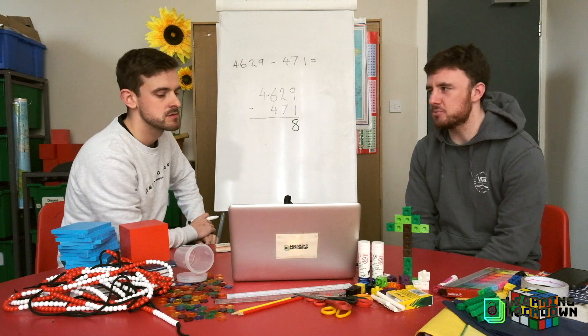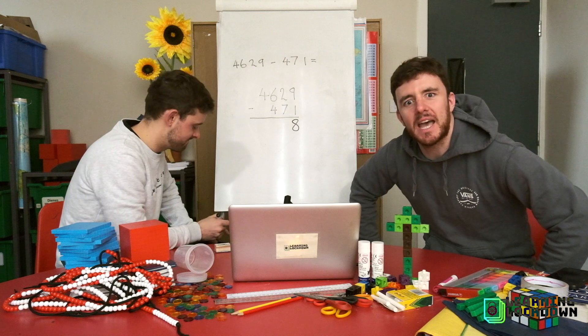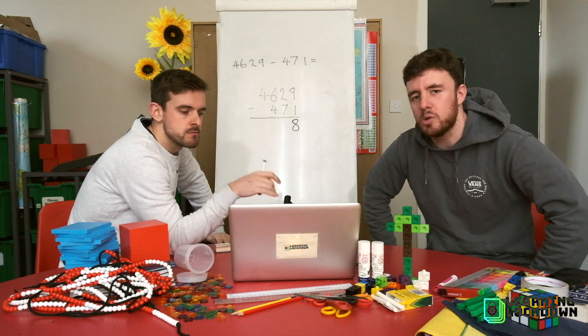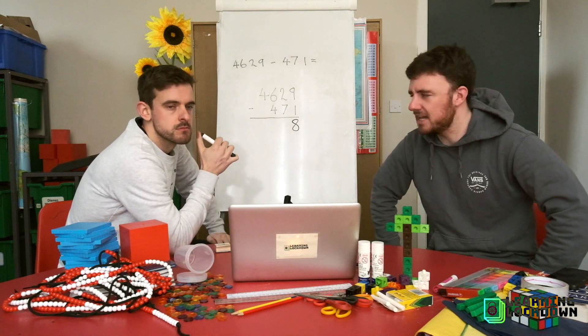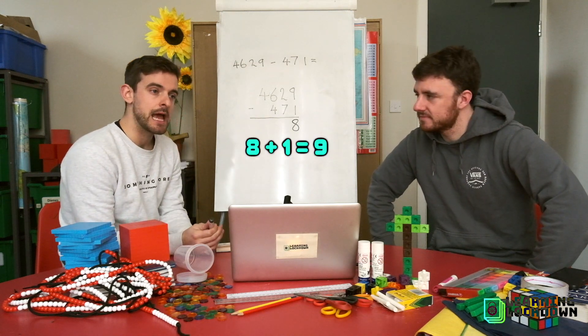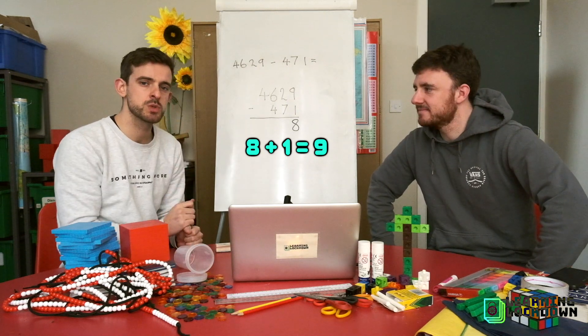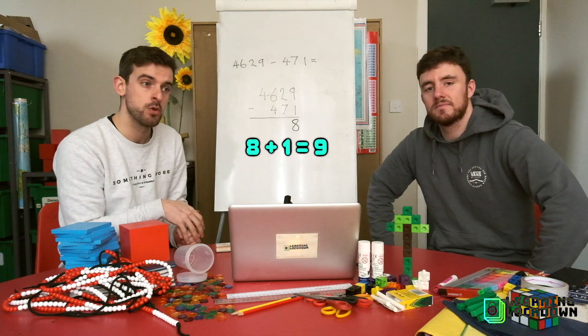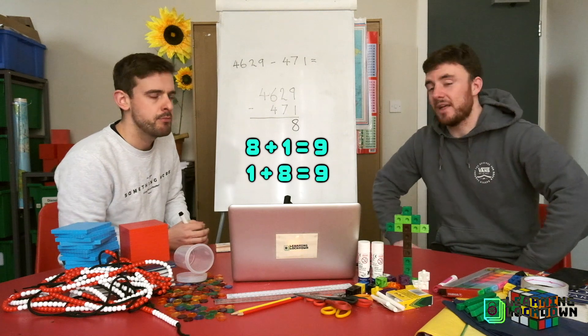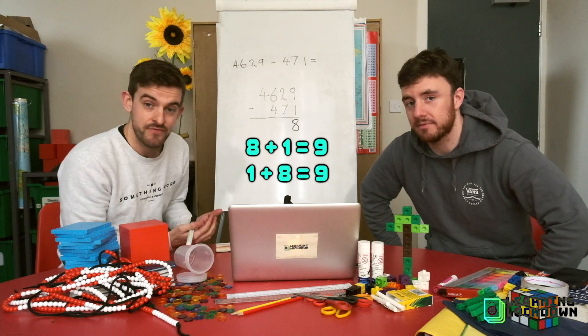In the next column we have 2 tens subtract 7 tens. 5 tens. No. And this is something we see every day in class when we do these things. Because subtraction is what we call non-commutative. Mr. A, tell us about that. Well, non-commutative. Let's think about addition for a second. If I do 8 add 1, I get 9. And I can use something called the commutative where I swap round the 8 add 1 and I switch it to say 1 add 8. And the answer is still 9. So that's called commutative. Addition is commutative, but subtraction is not commutative.